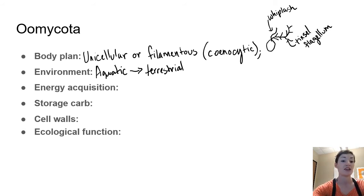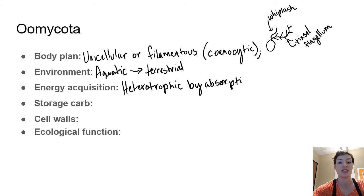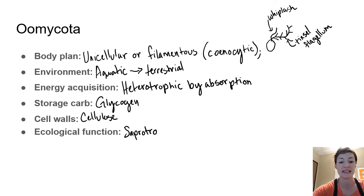Energy acquisition - they are going to be heterotrophic by absorption just like fungi. So instead of ingesting and engulfing, they are going to excrete or secrete digestive enzymes and then soak up their nutrients. They'll store their carbohydrates as glycogen just like us and just like fungi, but unlike fungi their cell walls are made of cellulose.